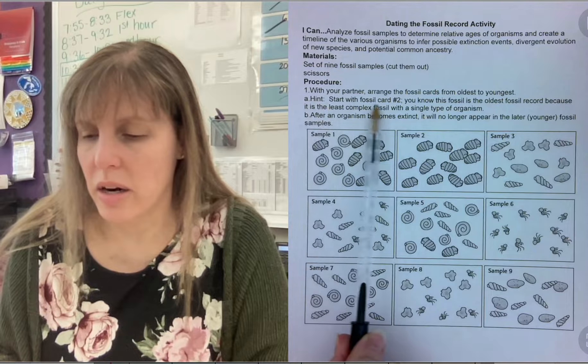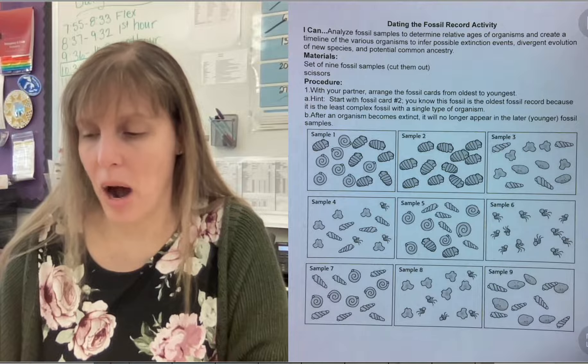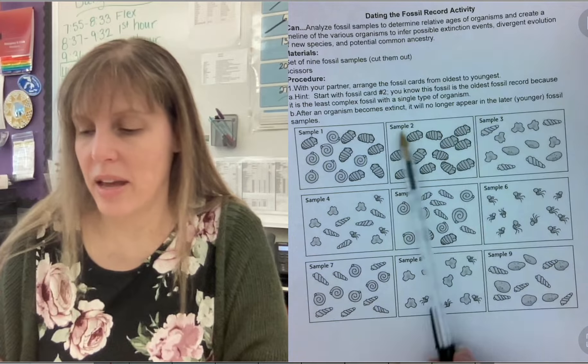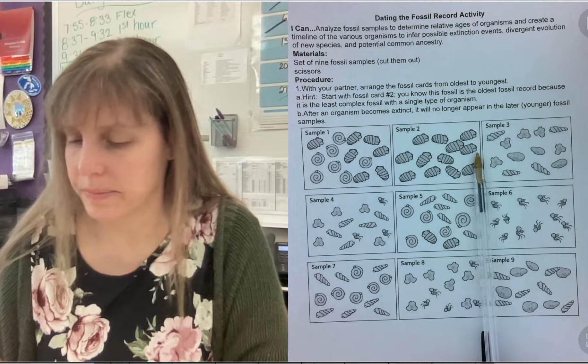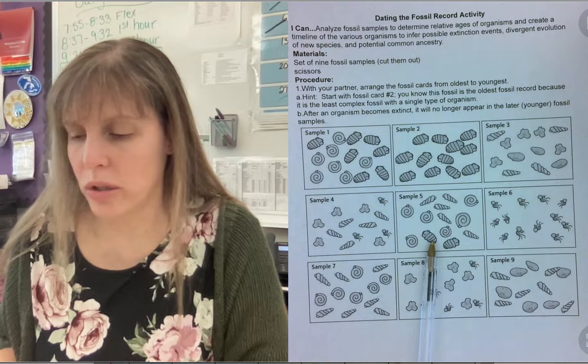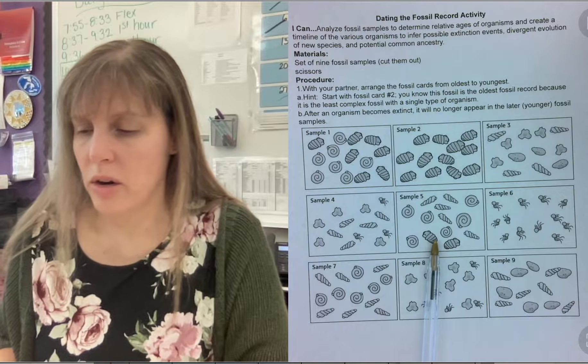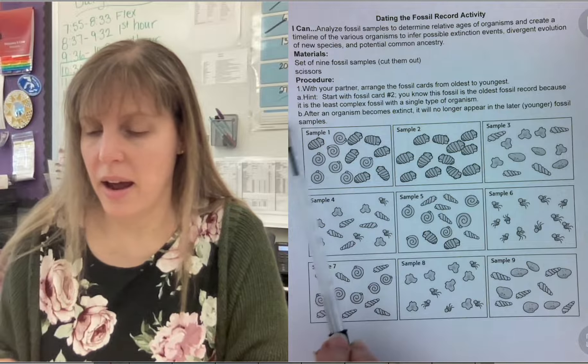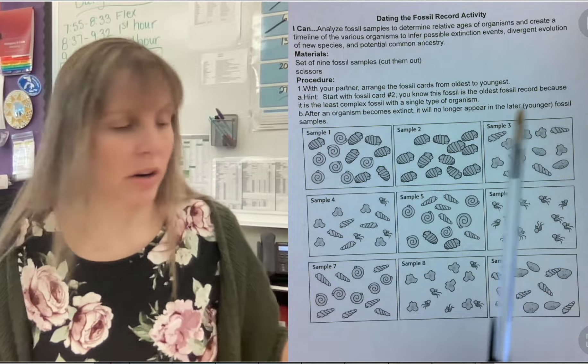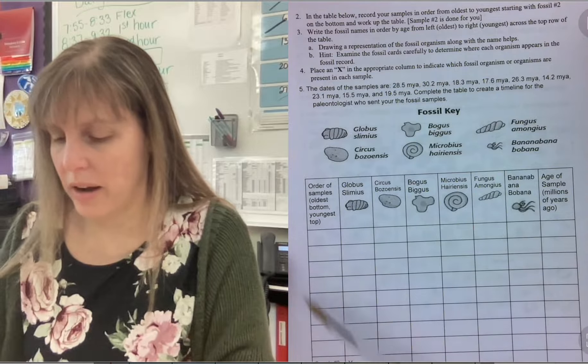So you're gonna start with fossil card number two. So that's number two. You're gonna start with that at the bottom. And then you're gonna look for another card that has this organism in it, which would be here or here. And usually two don't appear at the same time. Okay? So then you're gonna put them in a long line. And then after an organism becomes extinct, it will no longer appear in the later or younger fossil samples. So this explains to you how to use the fossil key.